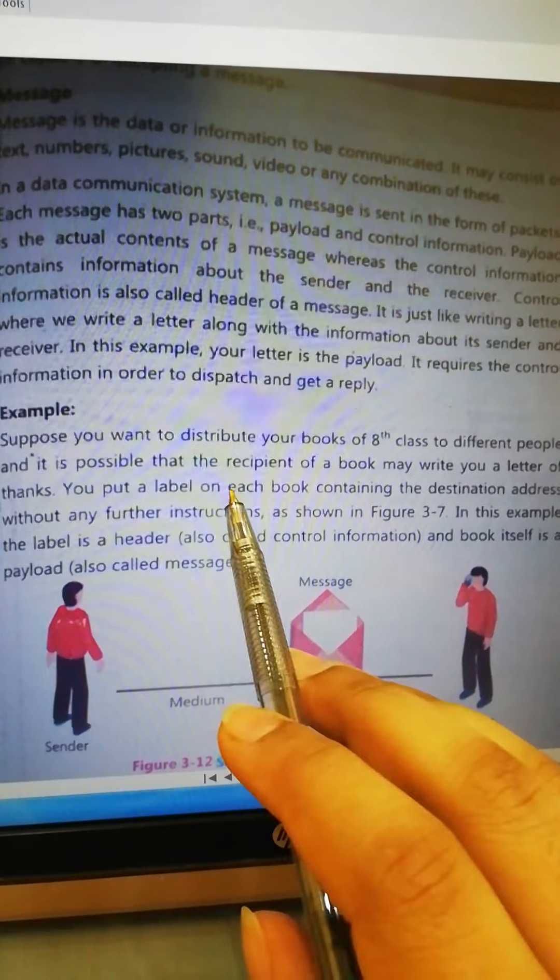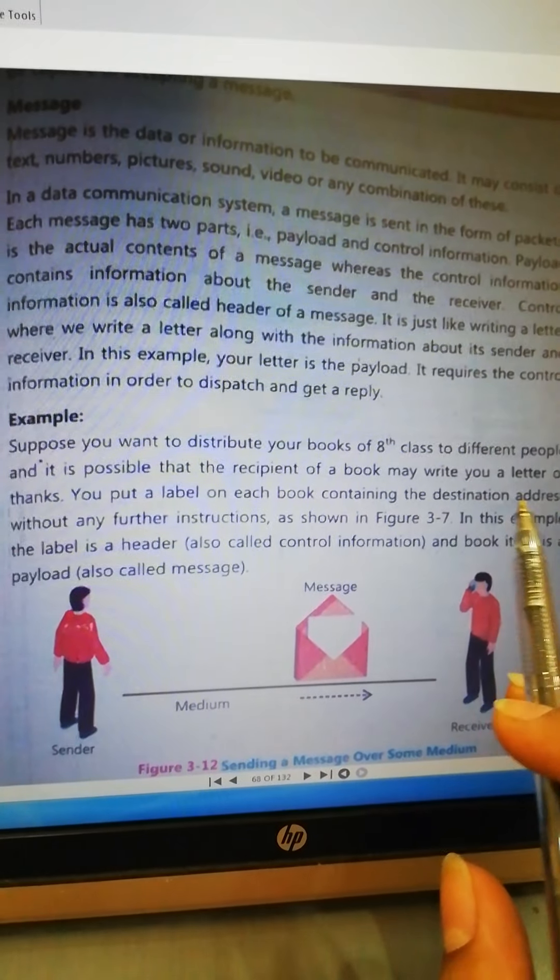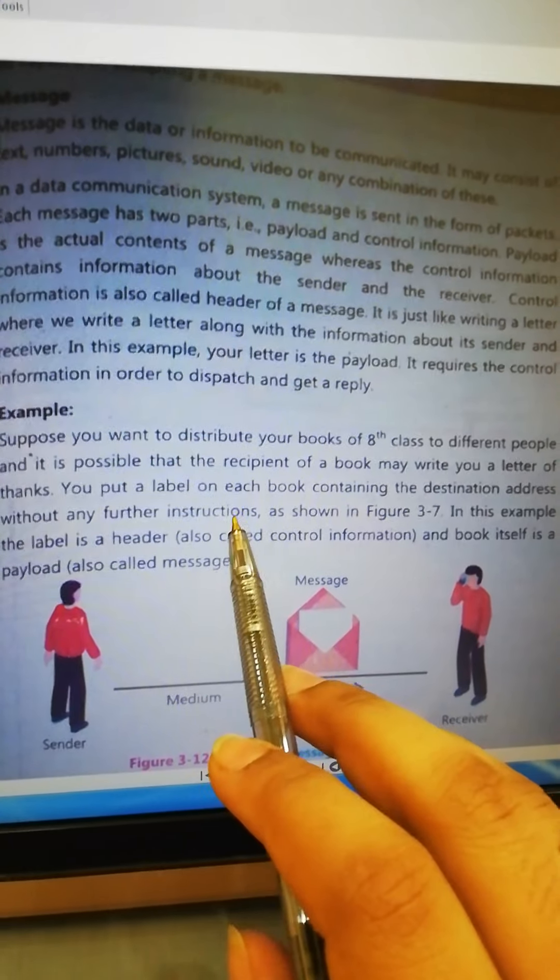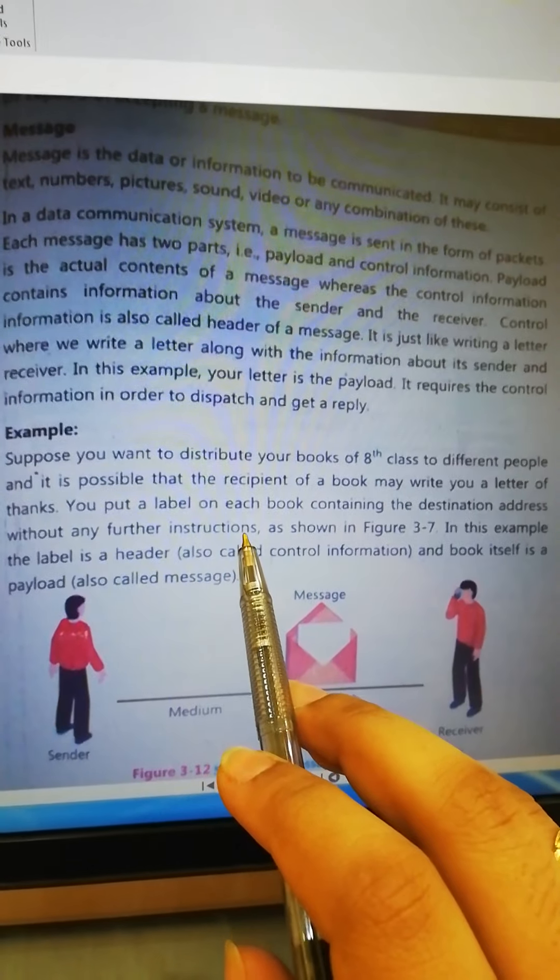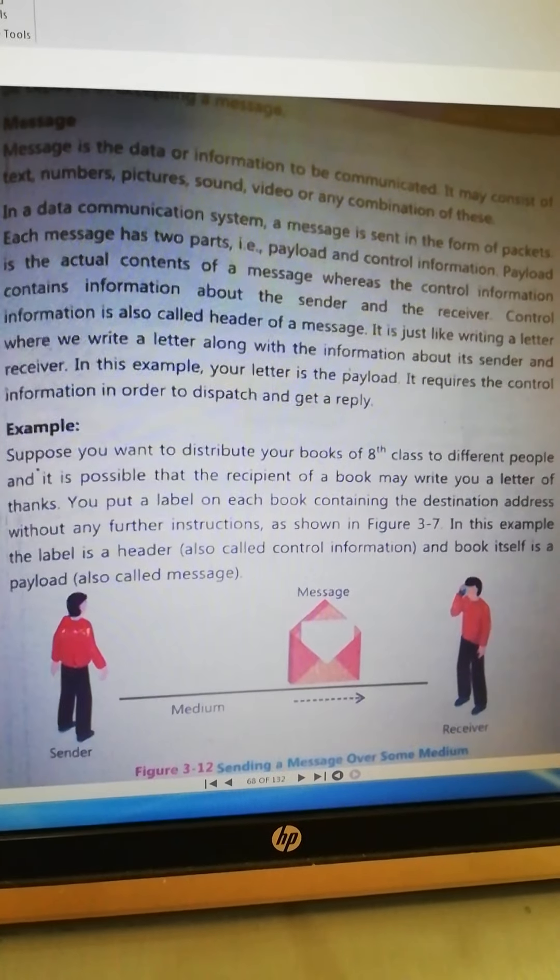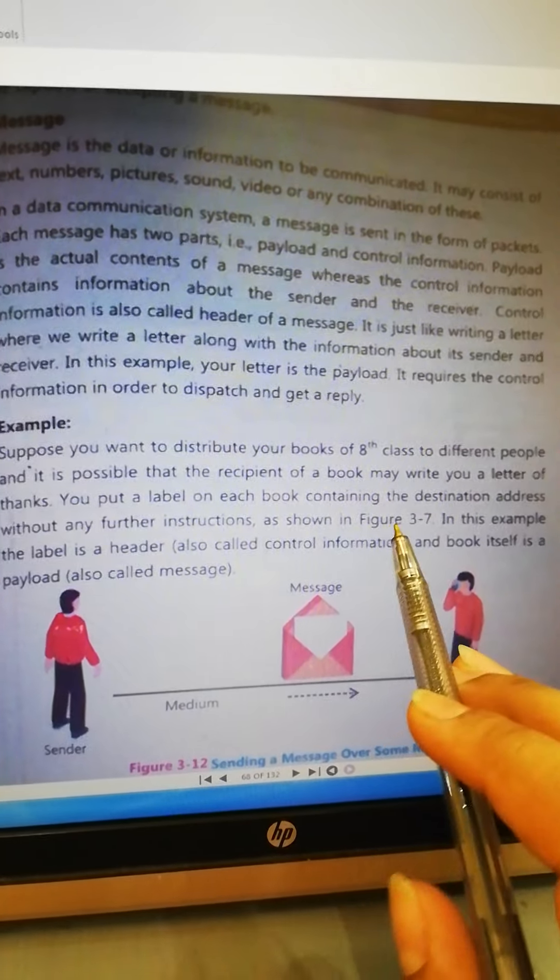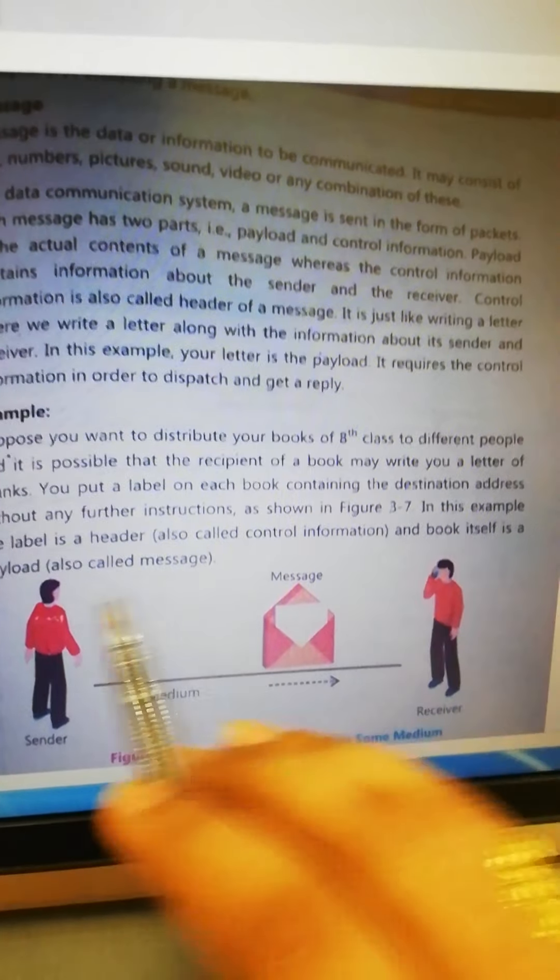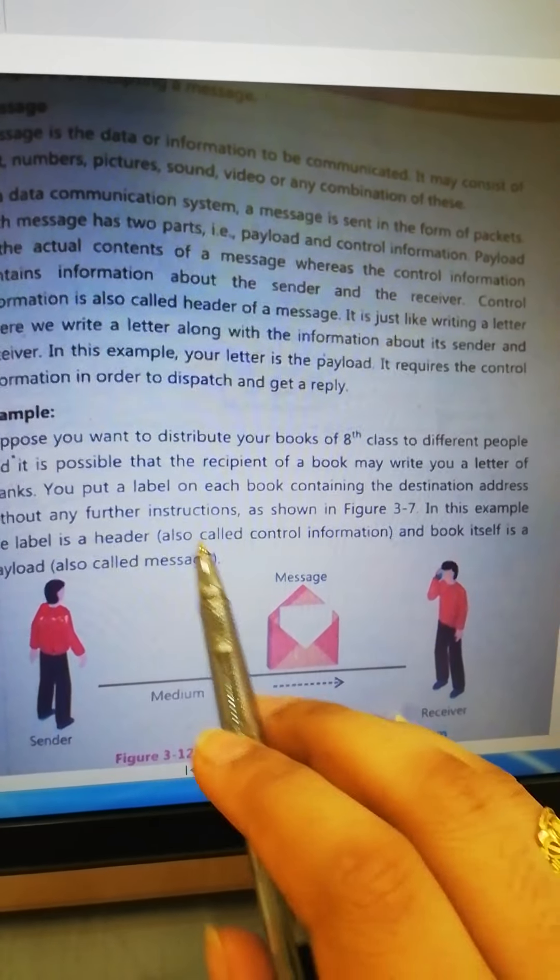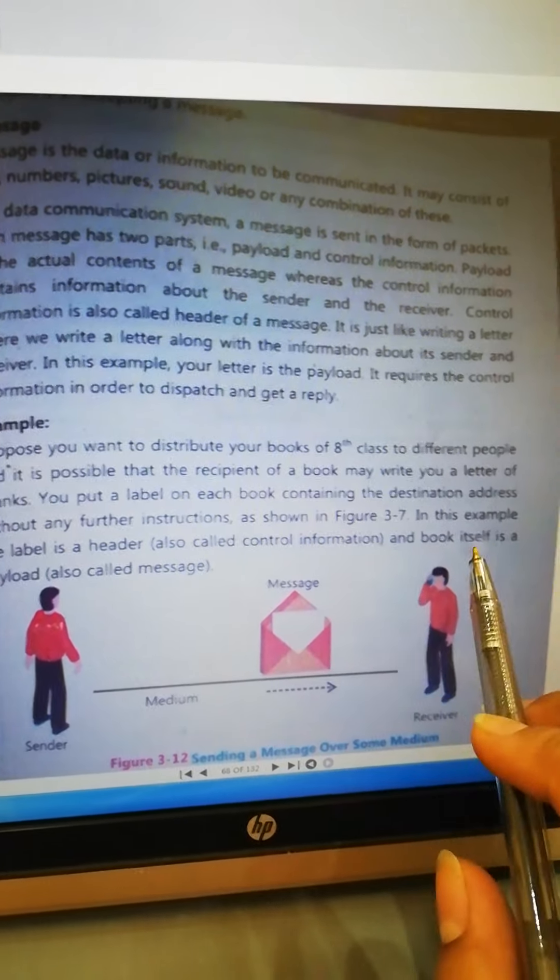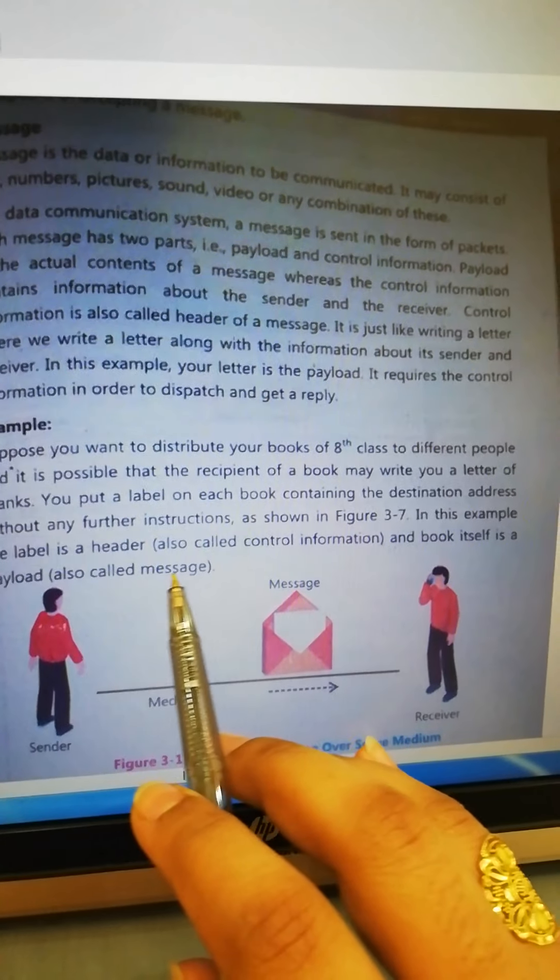You put a label on each book containing the destination address without any further information. Now, wherever you have sent the book, you will write the address as shown in figure 3.7. In this example, the label is a header, also called the control information and the book itself is payload. It is also called message.